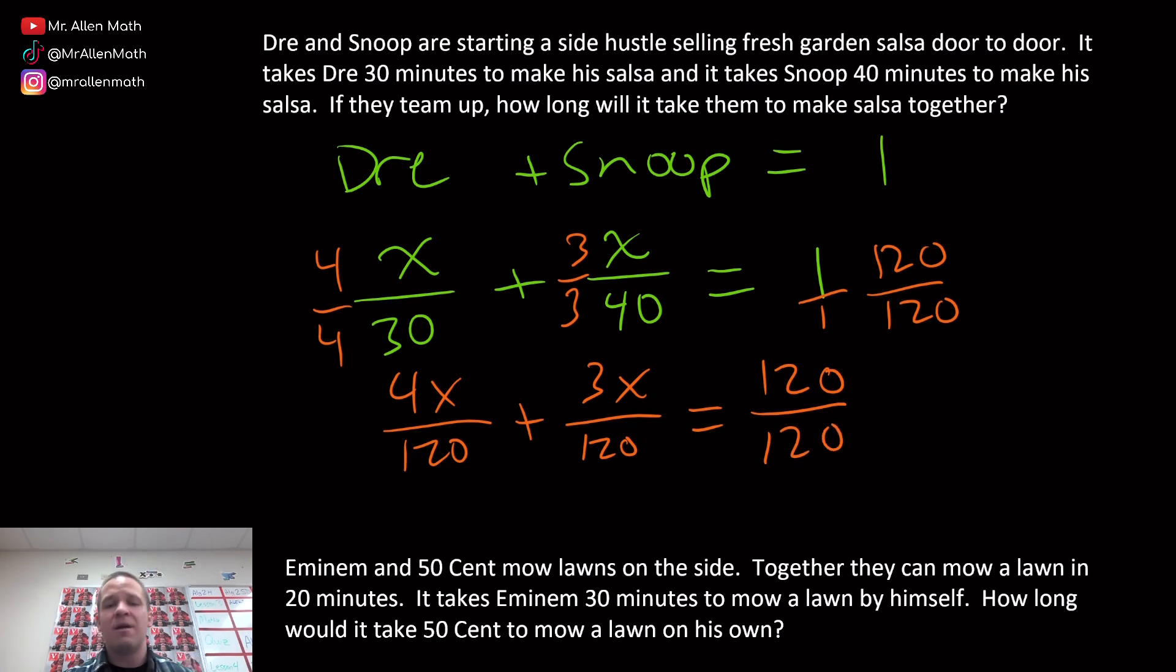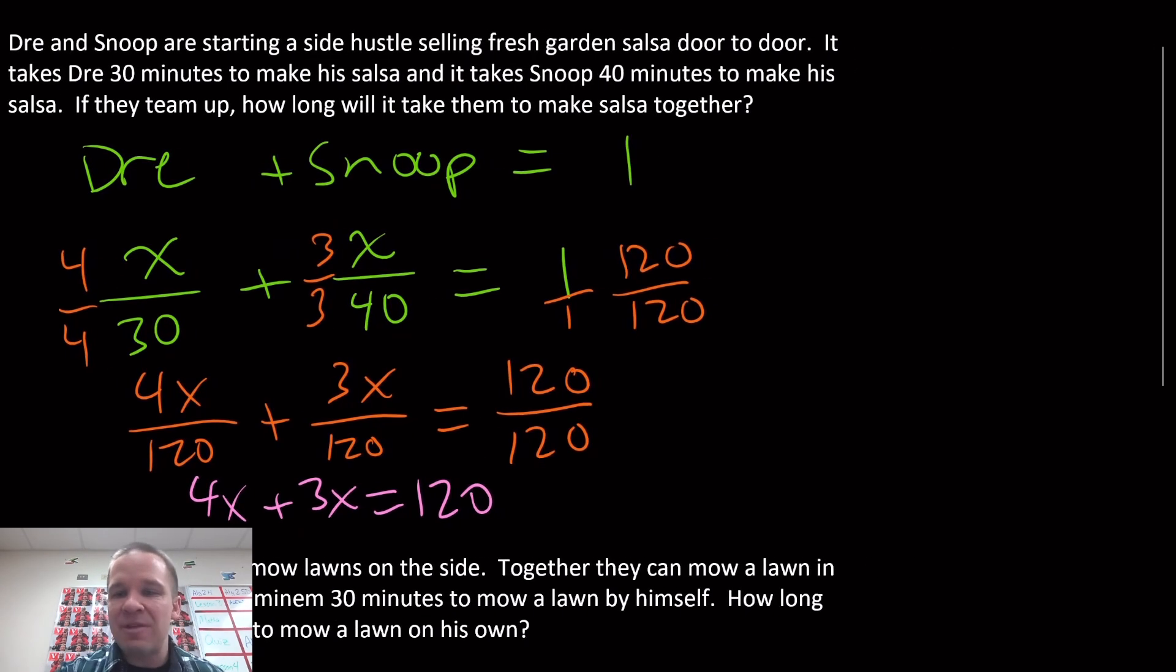So now I've got 4X over 120 plus 3X over 120 equals 120 over 120. That's a whole lot of 120's there. My denominators are the same, so I can actually just take my numerators and set them equal to each other. So I've got 4X plus 3X equals 120. So now I have 7X equals 120. I'm just going to divide by 7 on both sides.